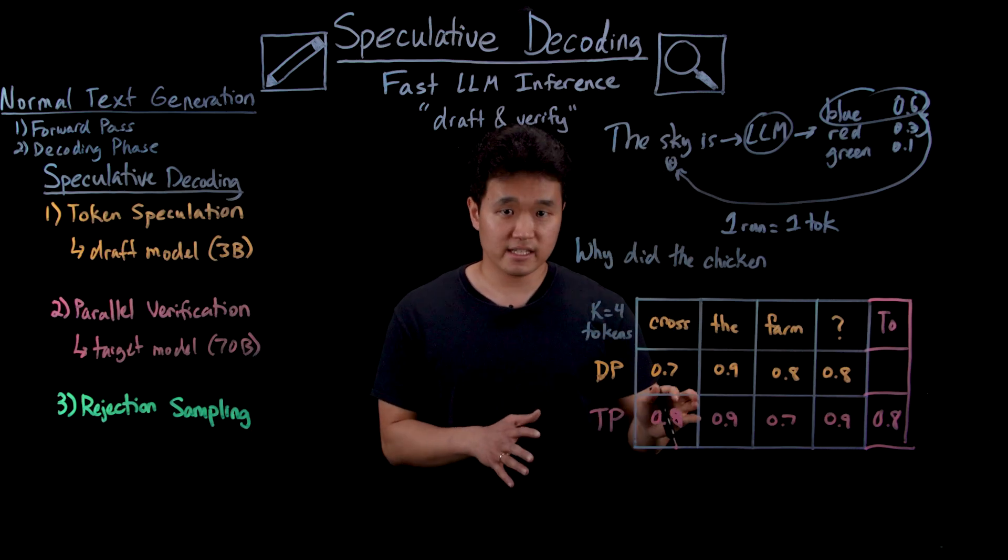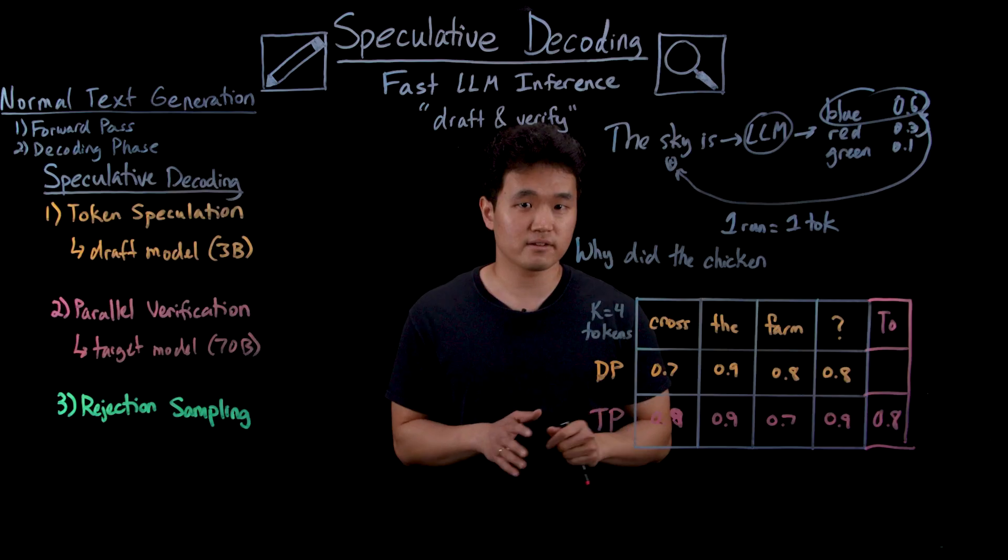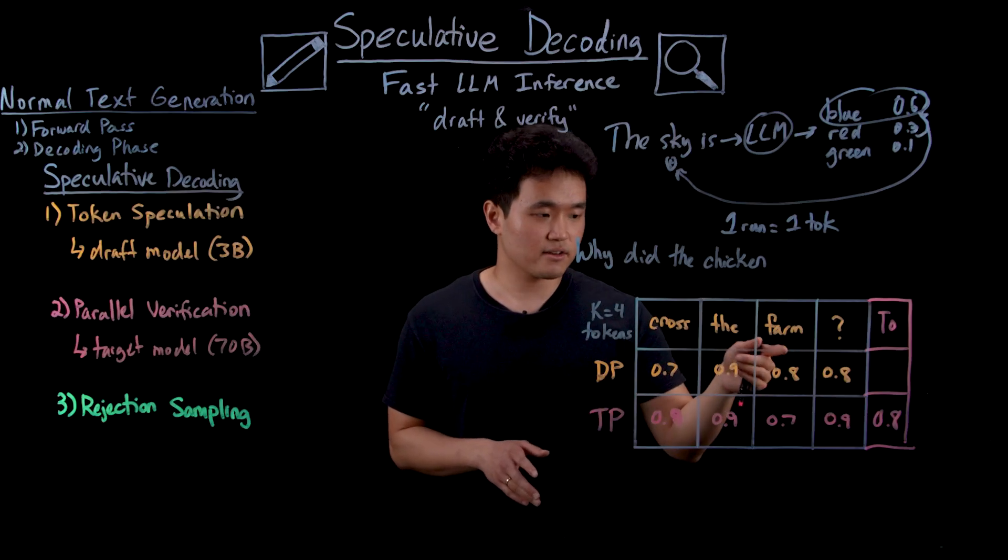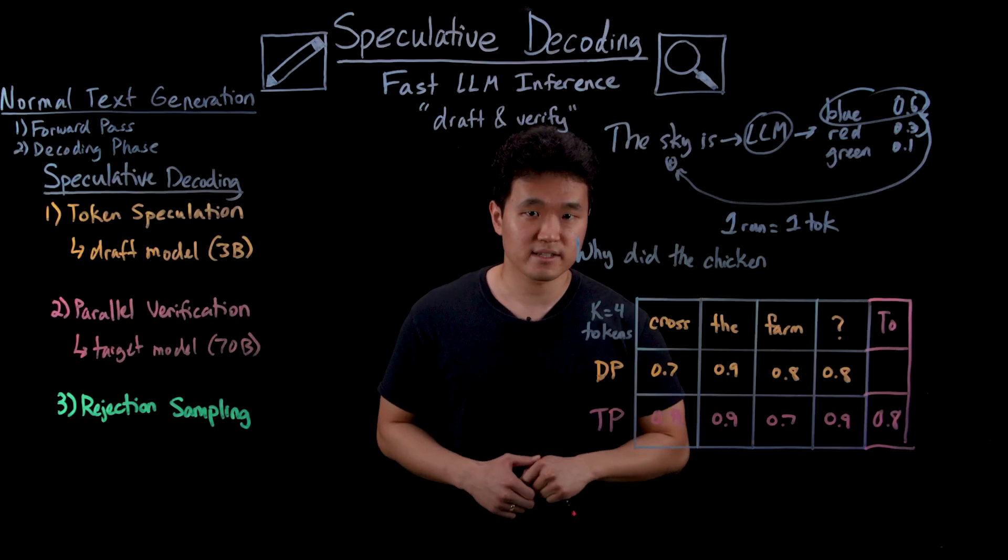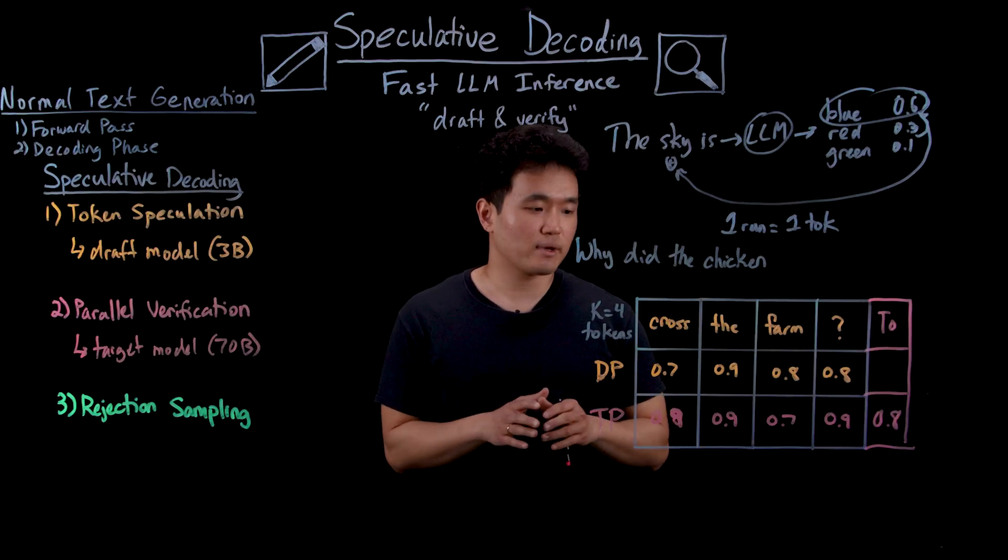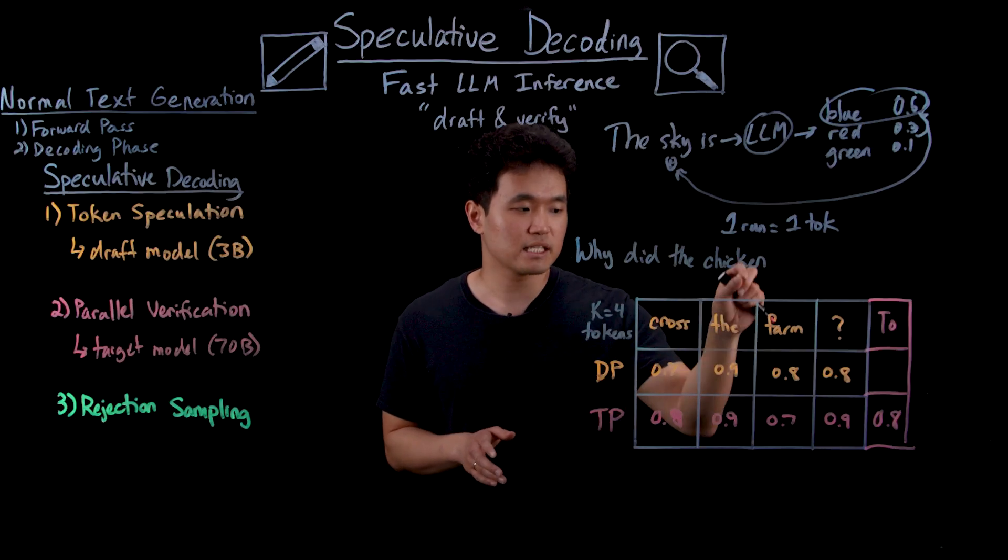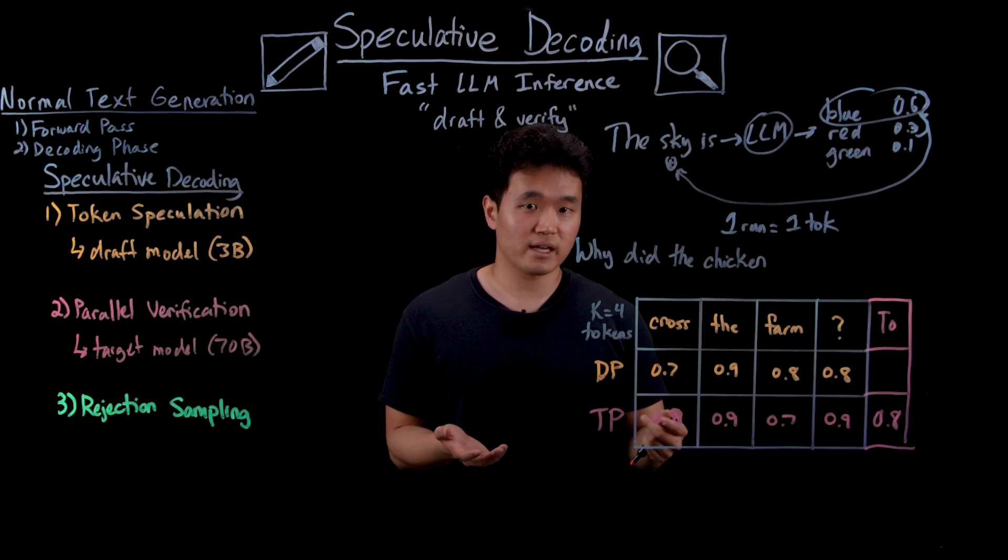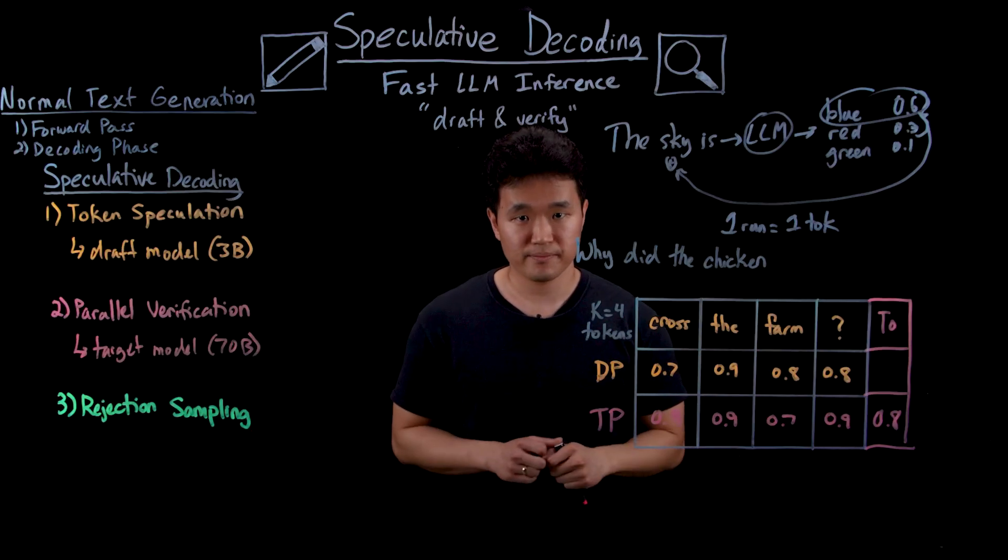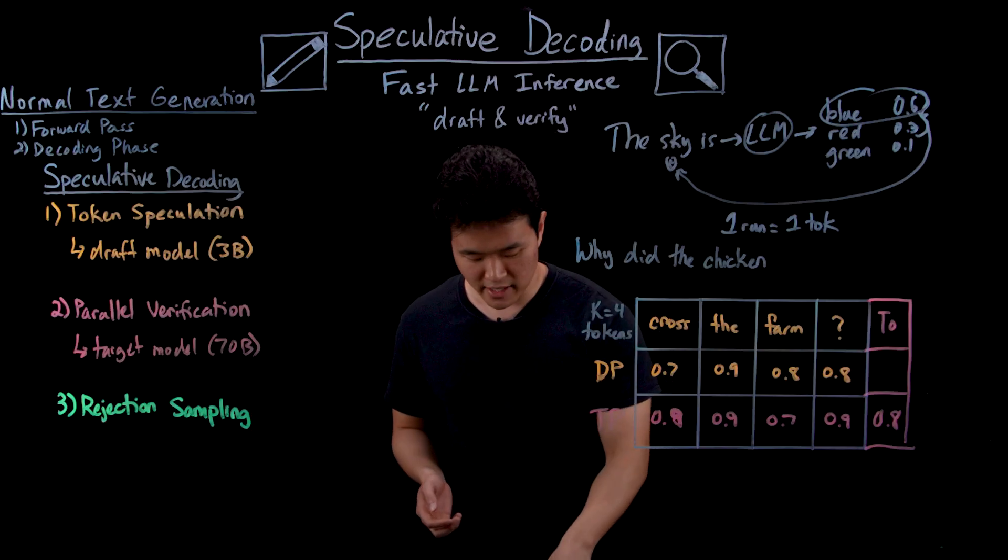So verification here simply means checking to see whether the speculated tokens are something the target model would have also produced given the same context. And remember, at this point we haven't actually chosen any specific tokens to append to our output. All we've done is created a pool of candidates that might work.